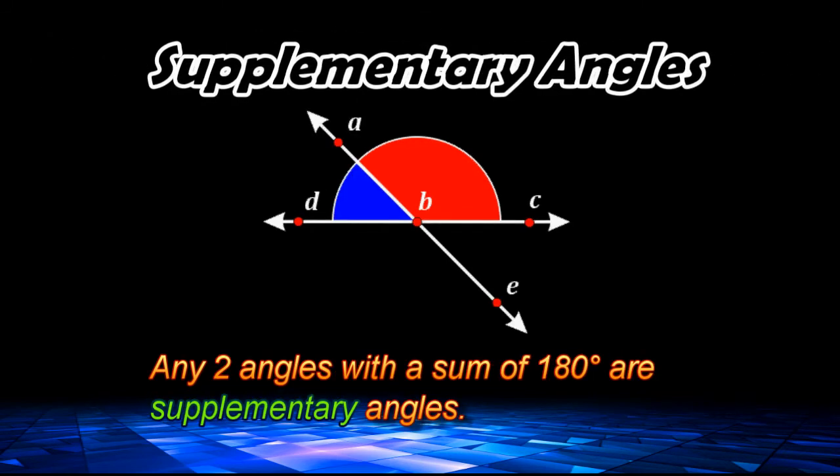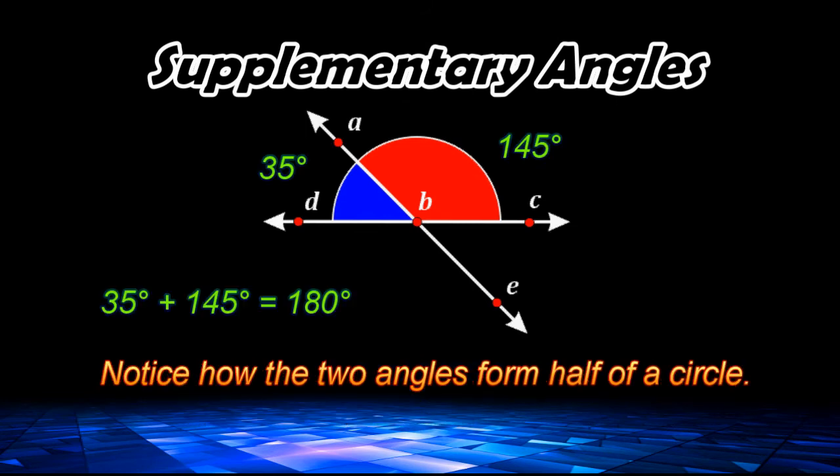Supplementary angles are any two angles that, when adding their angle measures, have a sum of exactly 180 degrees. In this example, we have an angle that measures 35 degrees and another angle that measures 145 degrees, and together they have an angle measure of 180 degrees.